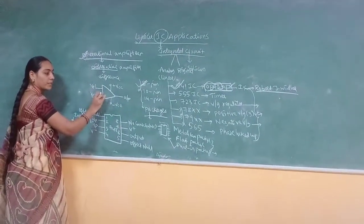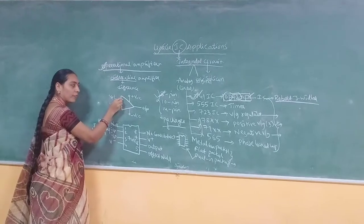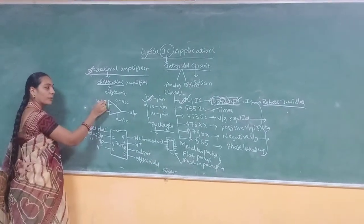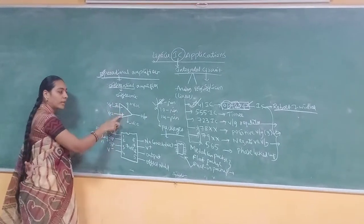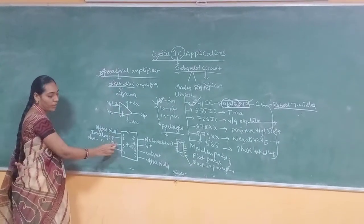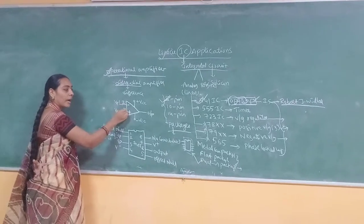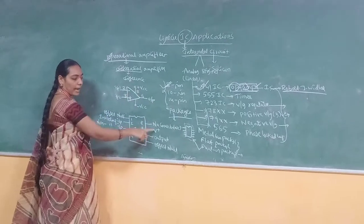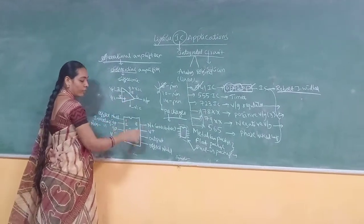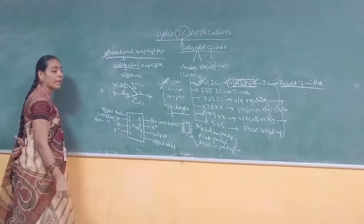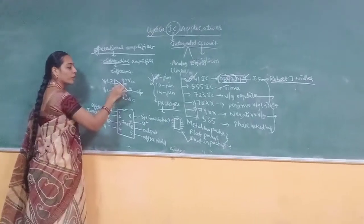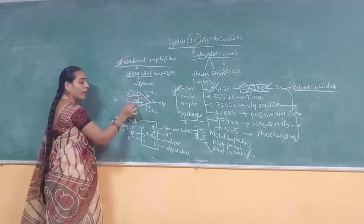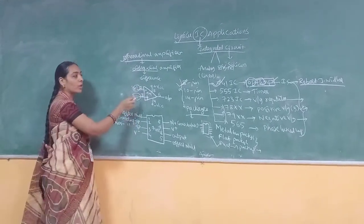The symbol of the op-amp is represented just like a triangle. The inverting input terminal is represented by a negative sign and is connected to the 2nd terminal. The non-inverting input terminal is represented by a plus symbol and is connected to the 3rd terminal. The output terminal is taken at the 6th terminal. The 7th terminal is the positive supply and the 4th terminal is the negative supply.